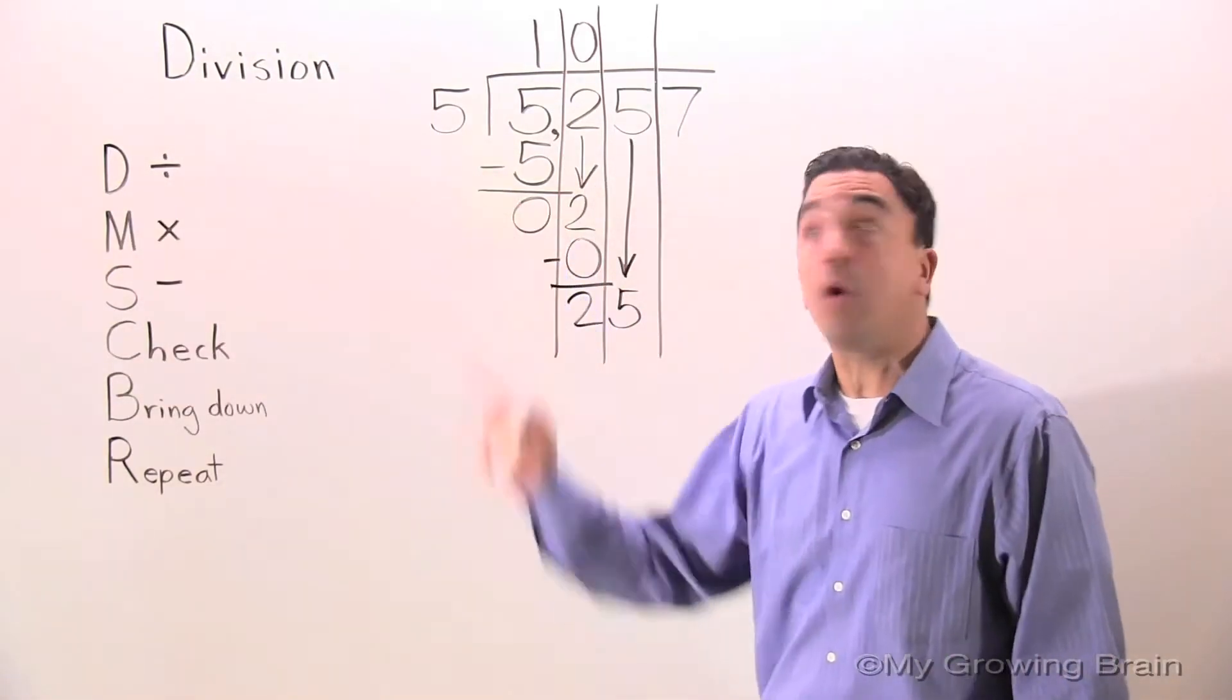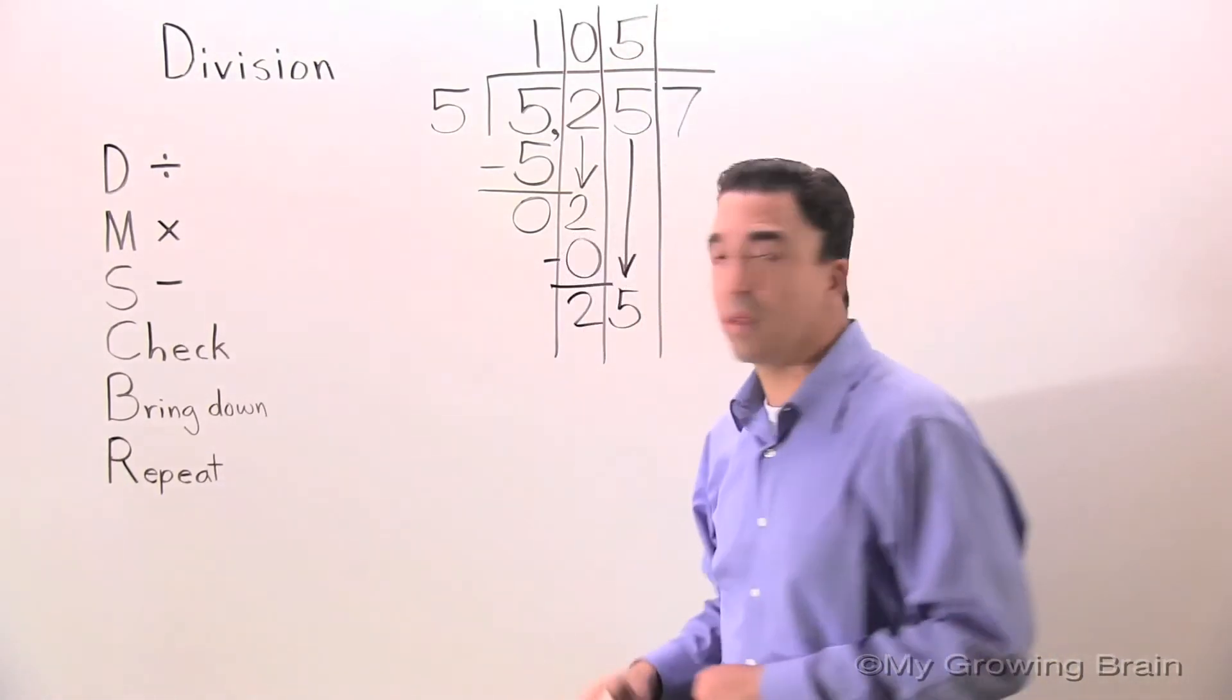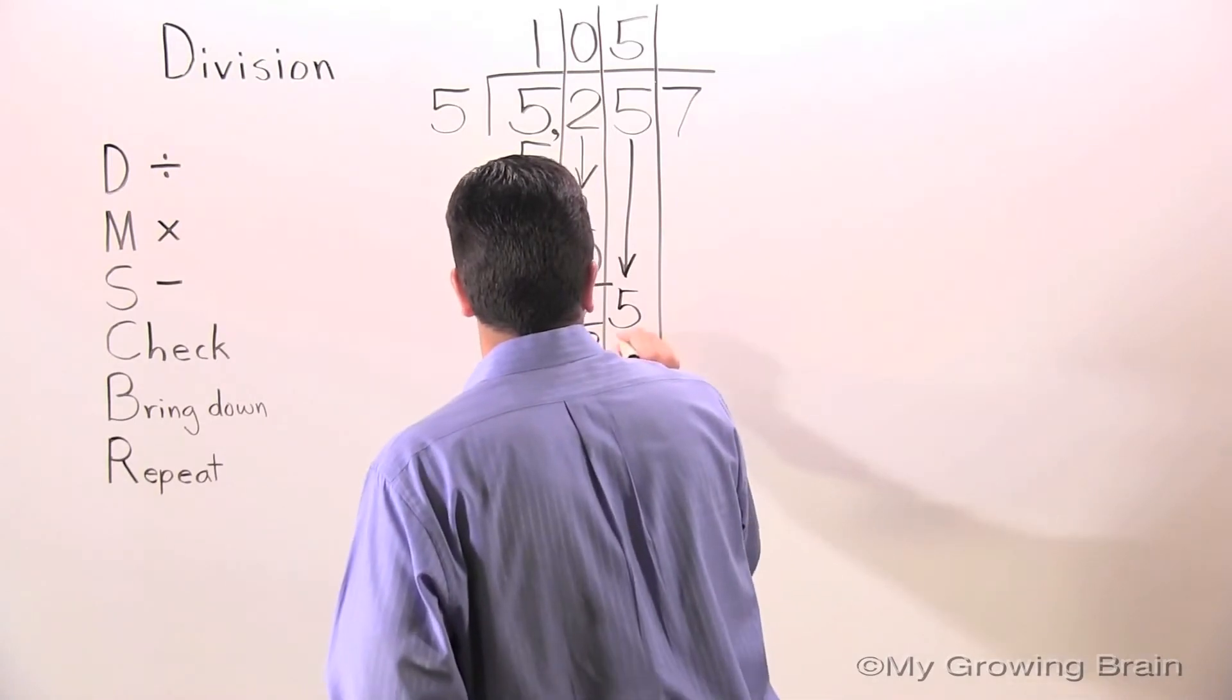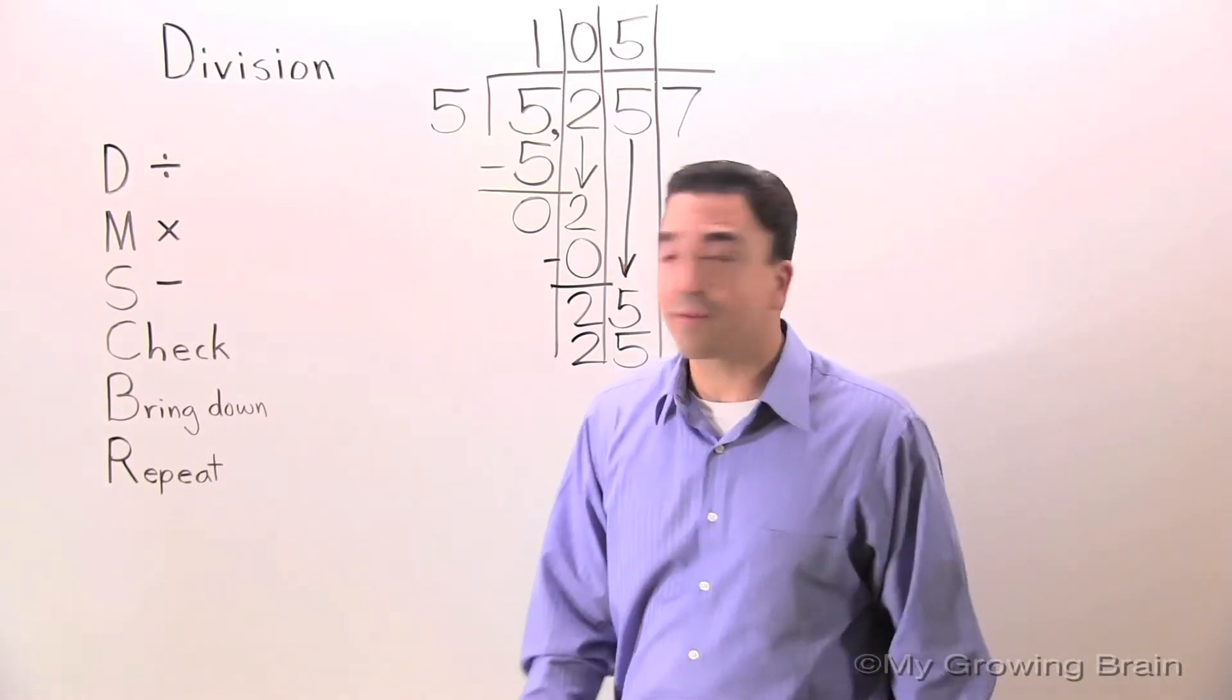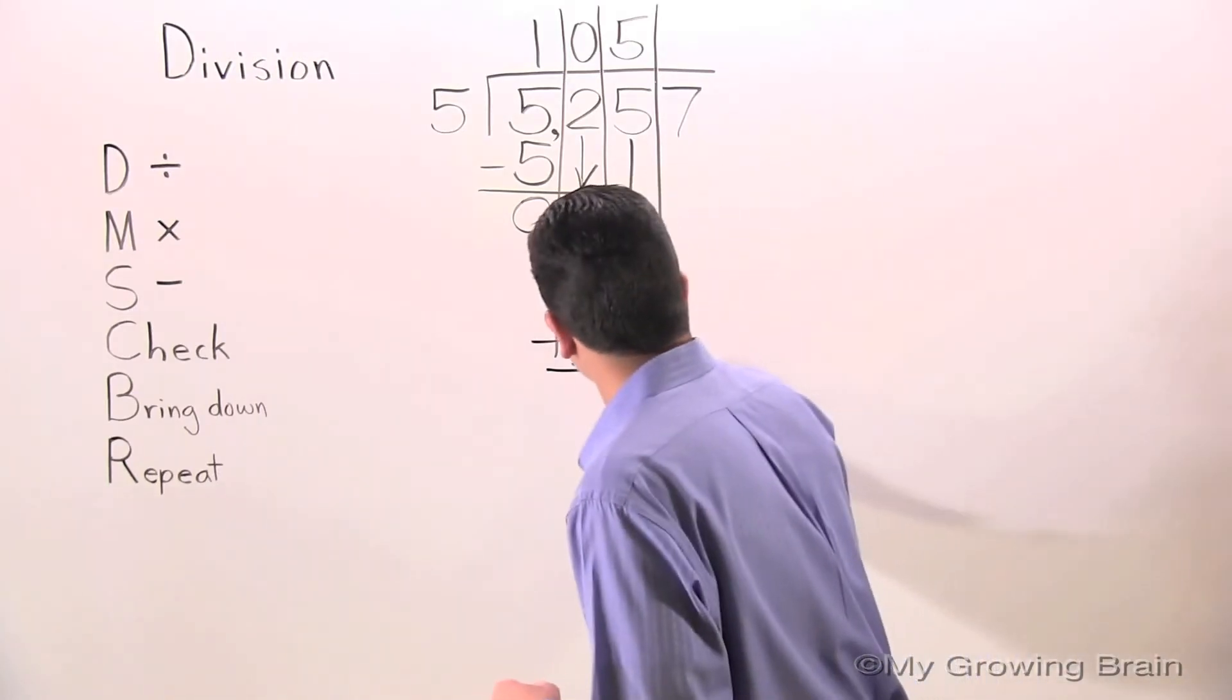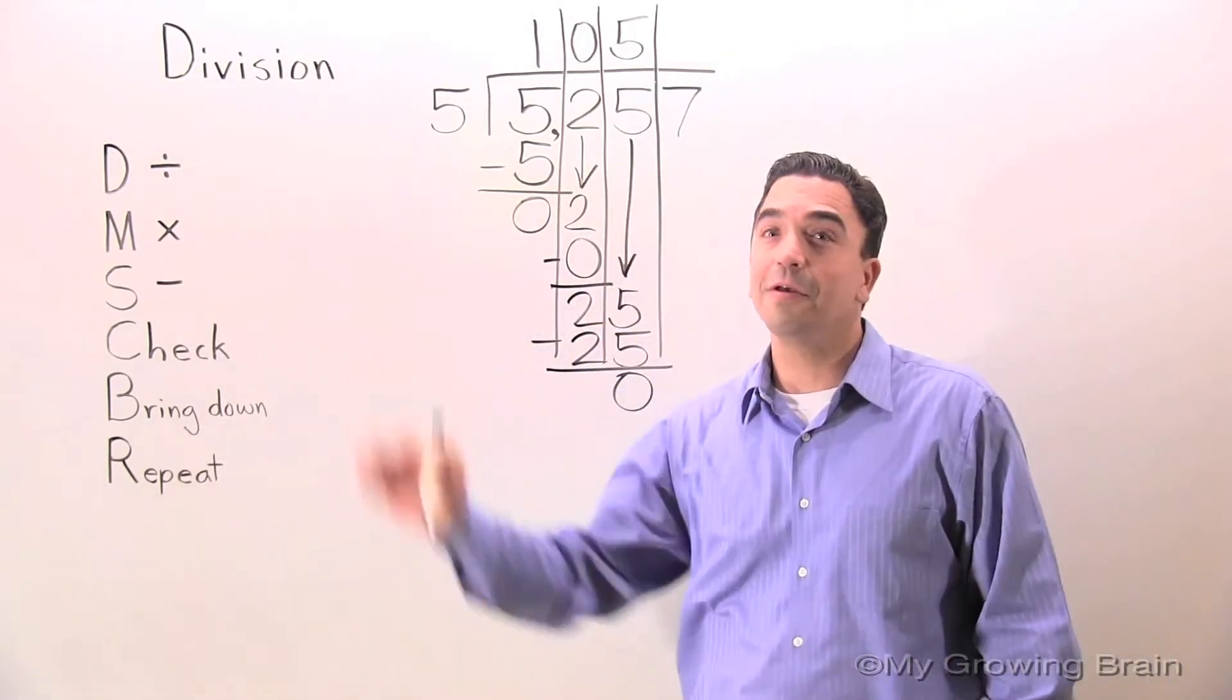Divide: 25 divided by 5, or 5 into 25, five times. Next step, multiply: 5 times 5 is 25. Next step, subtract: 25 minus 25 is 0. Next step, check: 0 is less than 5. Keep on going.